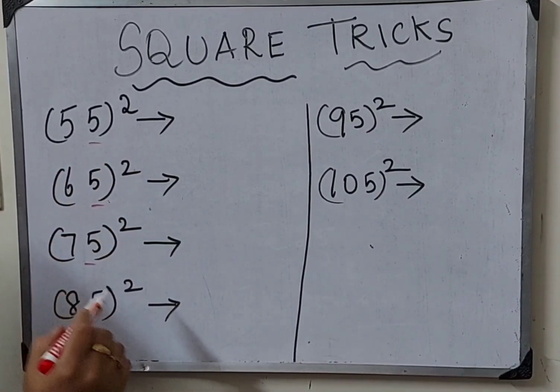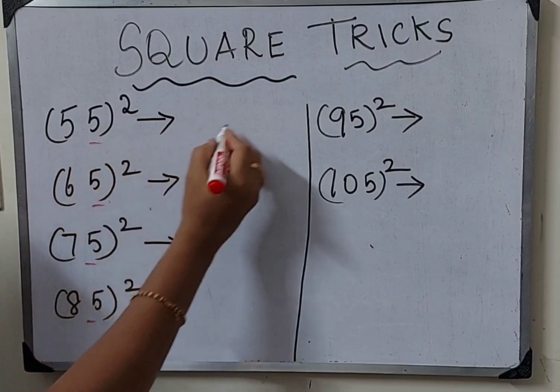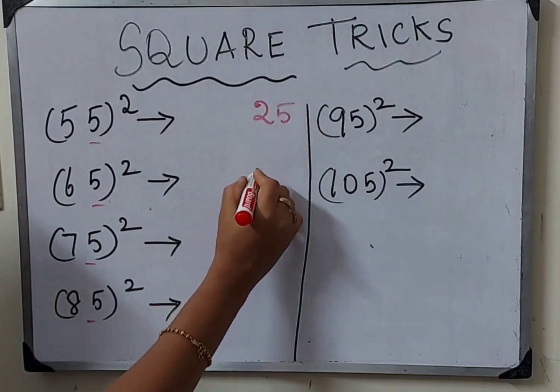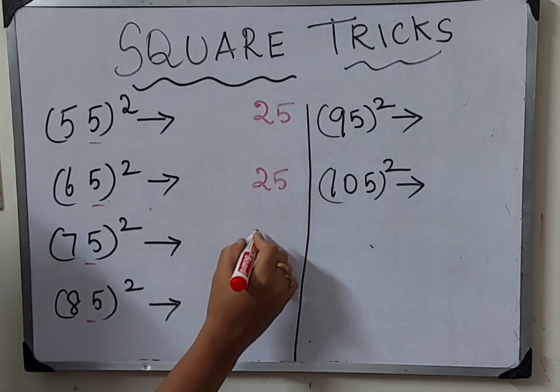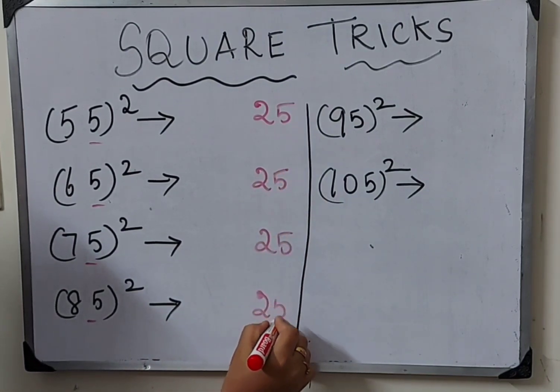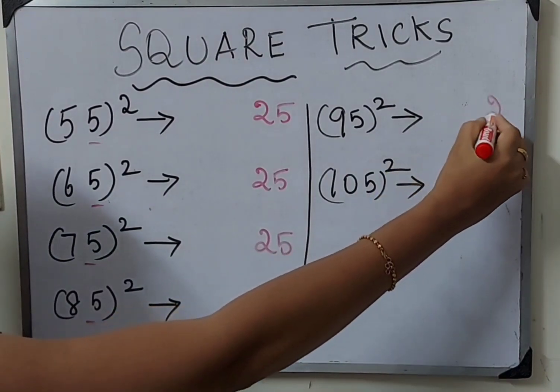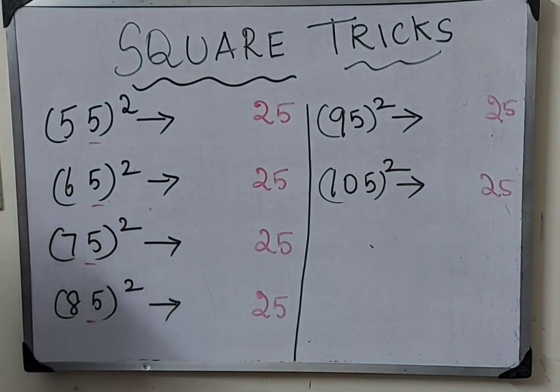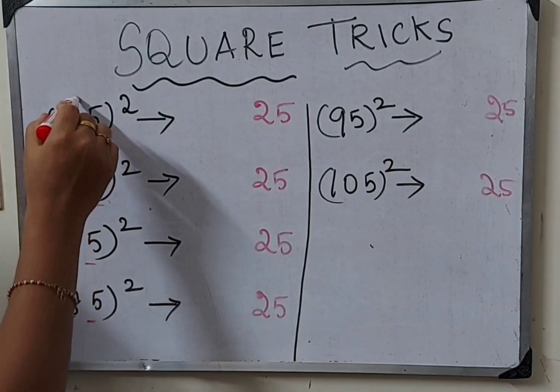Now let's try 55 square, 65 square, 75 square, 85 square, 95 square, 105 square. For all these numbers, we already know 5 square is 25, so we write 25 first. Then we follow the same technique.